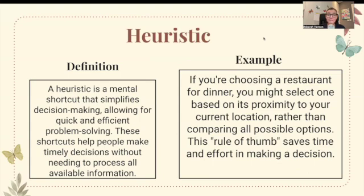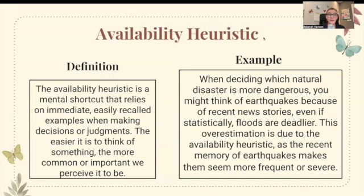A heuristic is a mental shortcut that simplifies decision-making, allowing for quick and efficient problem solving without processing all available information. For example, choosing a restaurant based on its proximity rather than comparing all options saves time. The availability heuristic is a mental shortcut that relies on immediately recalled examples when making judgments. For instance, you might think earthquakes are more dangerous than floods because of recent news stories, even though statistically floods are deadlier.